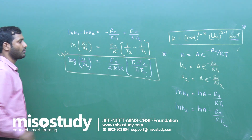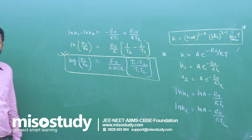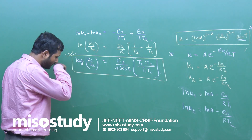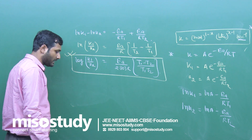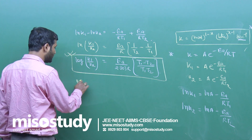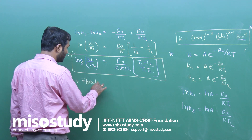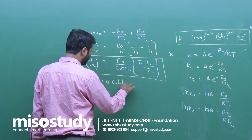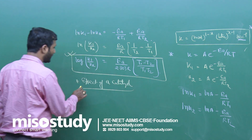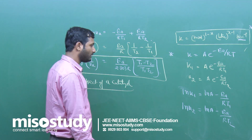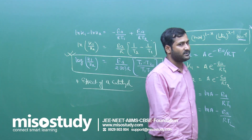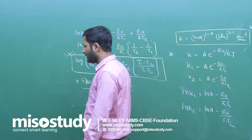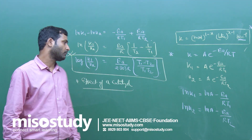We know that only effective collisions bring about a chemical reaction. Regarding the effect of a catalyst: a catalyst lowers the activation energy, thereby increasing the reaction speed and helping the reaction achieve equilibrium in a lesser interval of time.